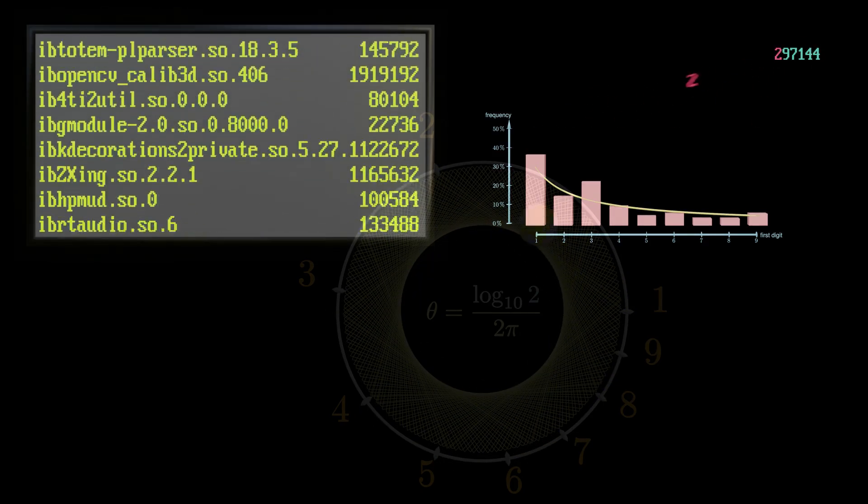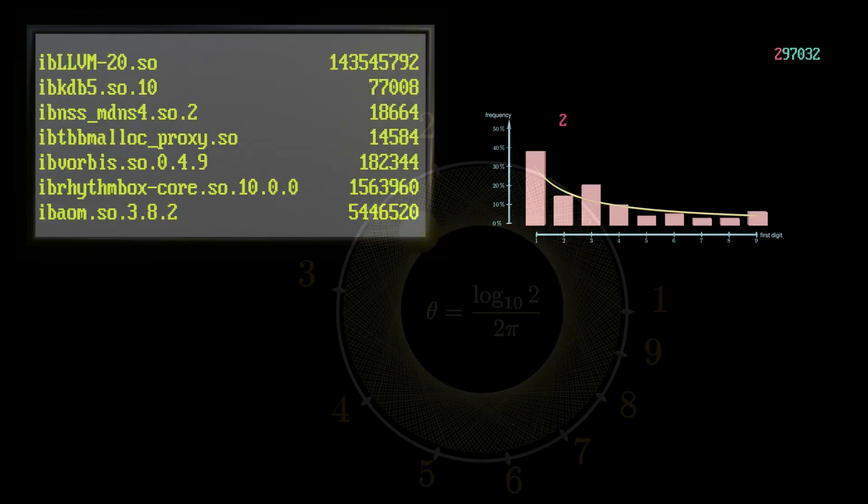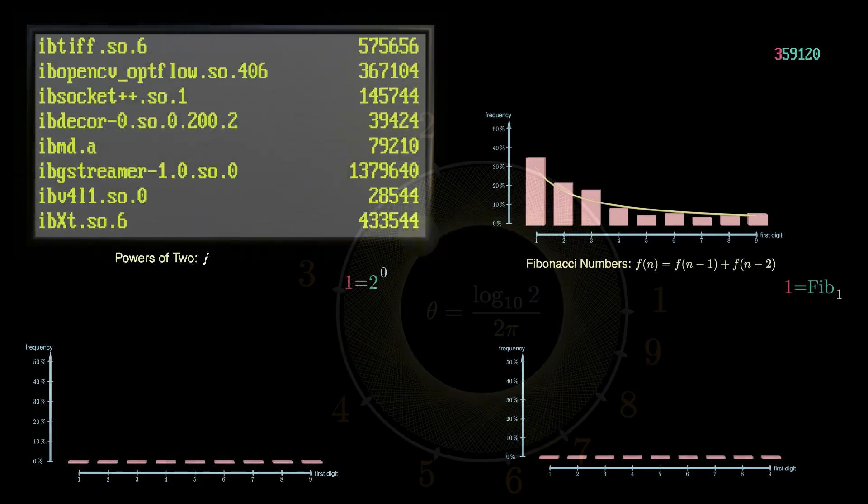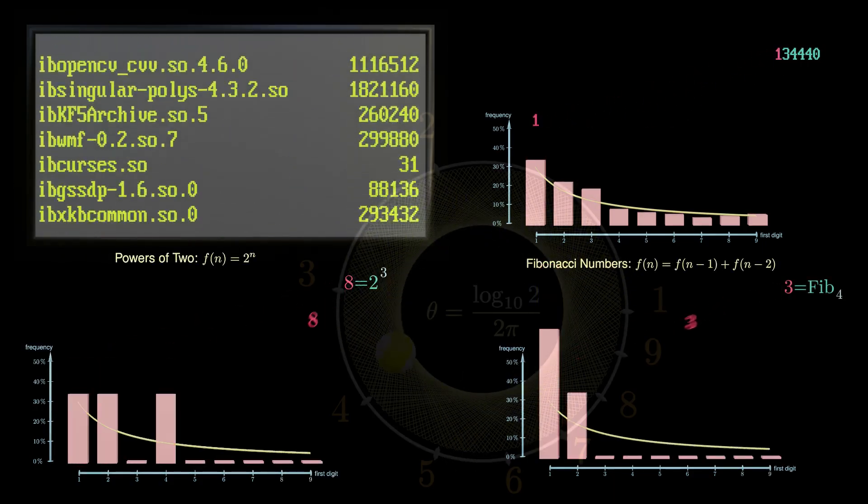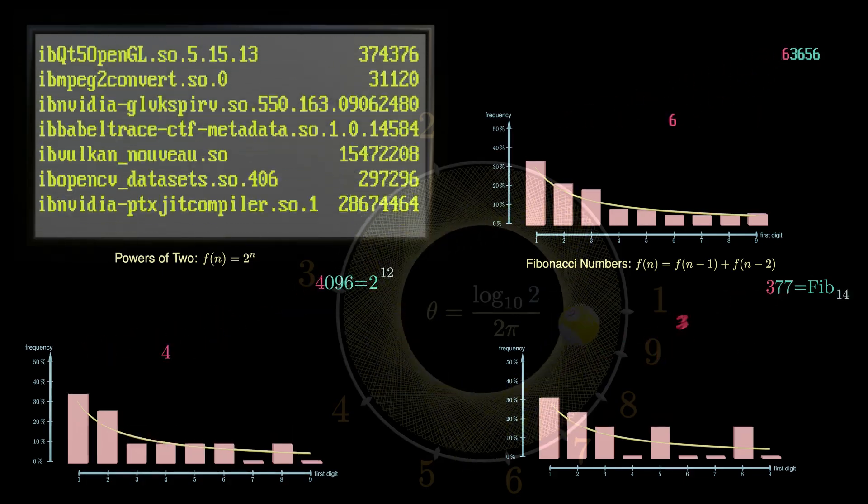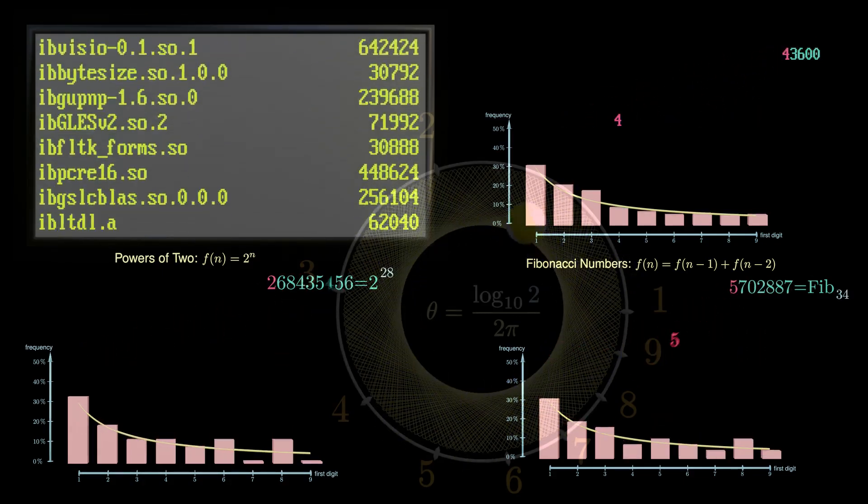It turns out that Benford's law is rather generic and holds true for a wide range of data sets. It's claimed that agencies use it to detect fake data in text reports. Does it hold for primes? What do you think? This is your challenge. I'm happy to hear your comments on it. My part of the story is told for today. I hope to see you again. Bye bye.